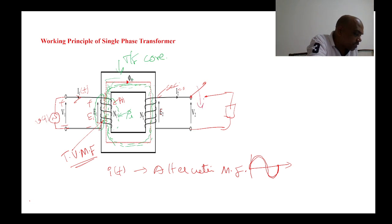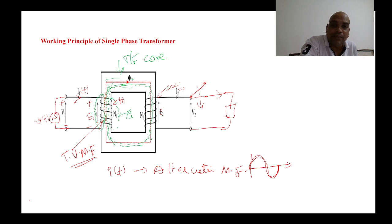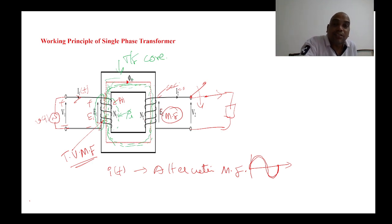If the switch is closed, current passes through the secondary coil. Whenever current passes through the secondary coil, a magnetic field is developed in the secondary coil. That secondary magnetic flux always opposes the main field flux.